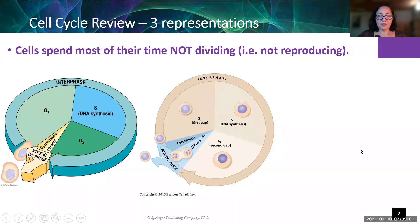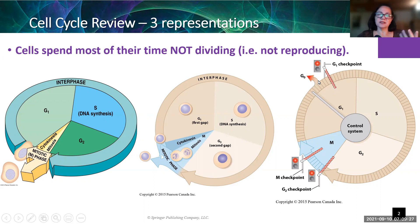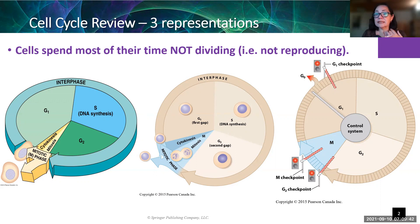A third diagram adds in some of the controls that keep the cell from cycling out of control. The cell motors along in G1 — many cells stay in G1 for years. In fact, some cells are permanently in this phase, sometimes referred to as G0. Examples: once we're done growing, our neurons go into G0, and our cardiac muscle cells go into G0. This is why heart attacks, brain damage, and spinal cord injuries are so devastating.